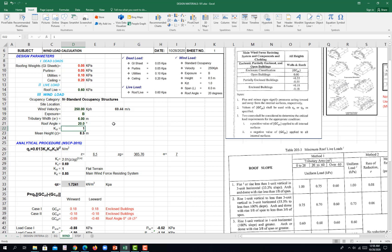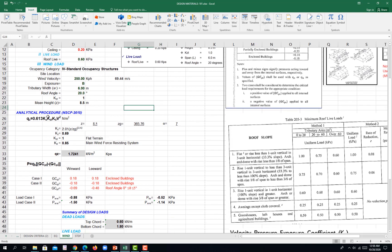You have there the roof live load being 0.6 kilopascal. And then occupancy category being 4, standard occupancy category. And then the wind velocity 250 kilometers per hour. You try to convert that one to a meter per second. Exposure B and the tributary wind being 6 meter, and then the roof angle being 20 degrees.